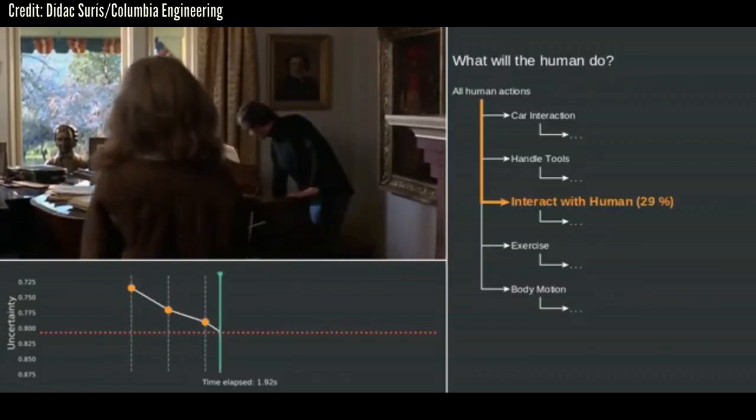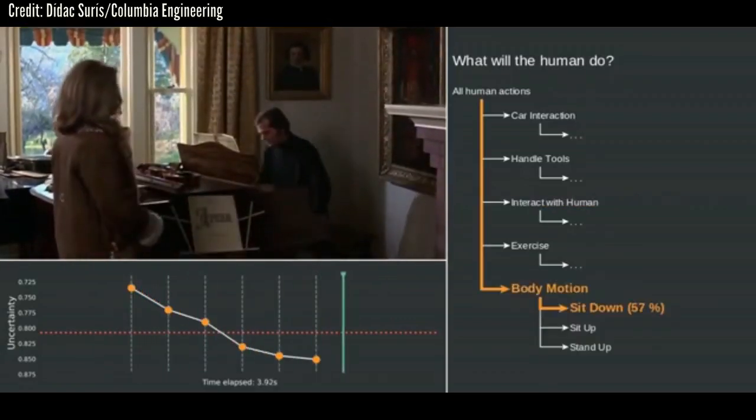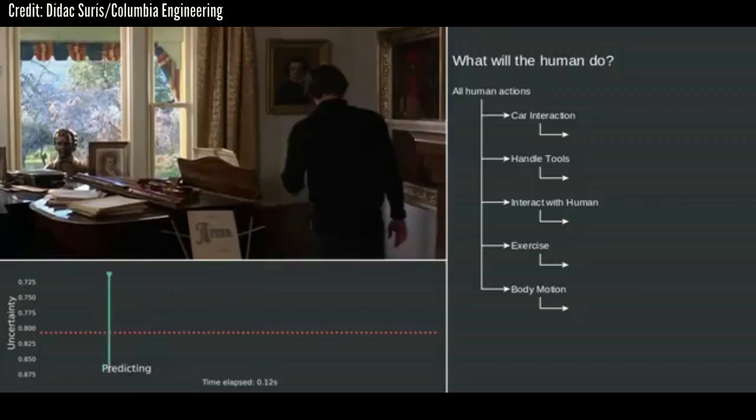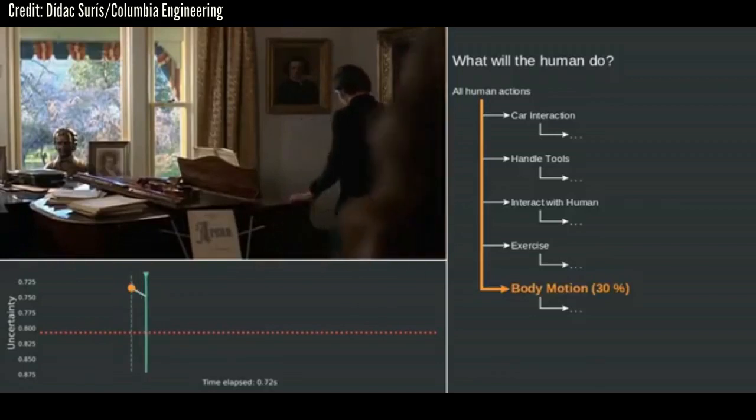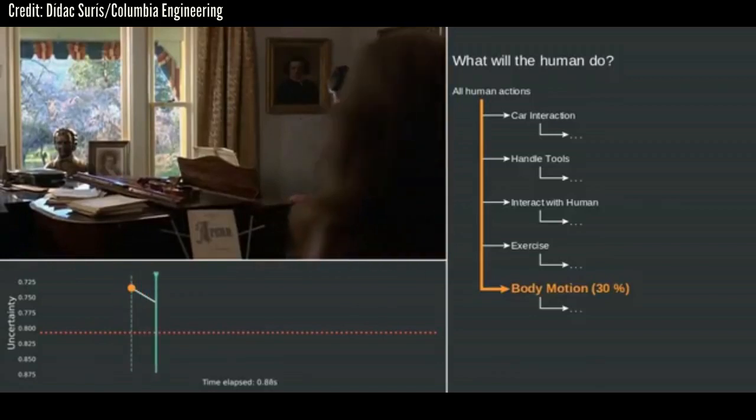Columbia engineering researchers developed a computer vision algorithm for predicting human interactions and body language in video, a capability that could have applications for assistive technology, autonomous vehicles, and collaborative robots.